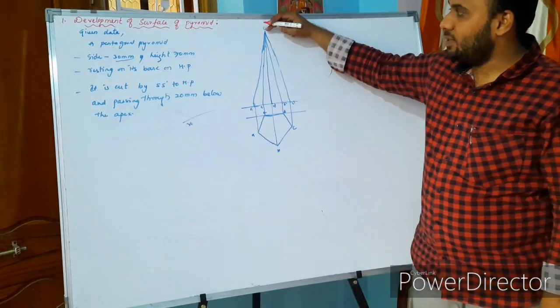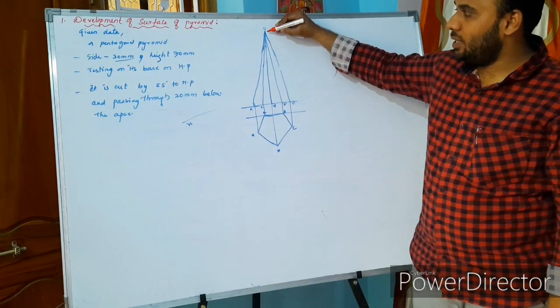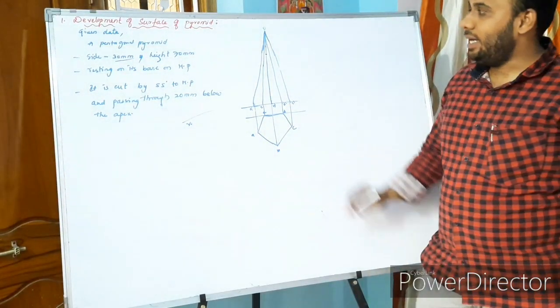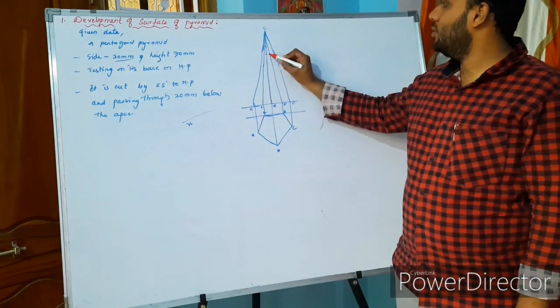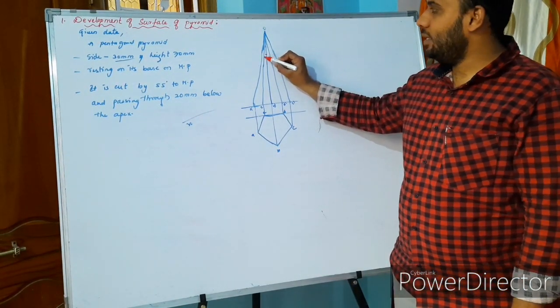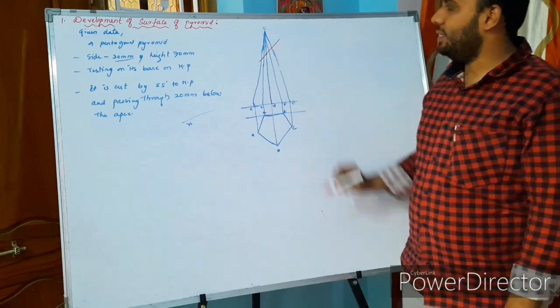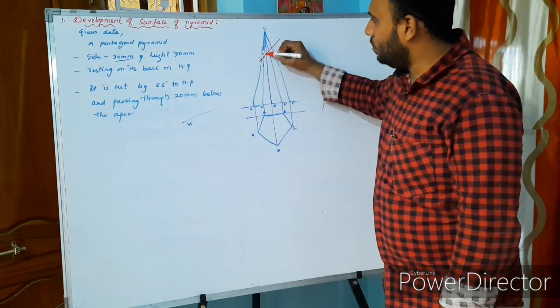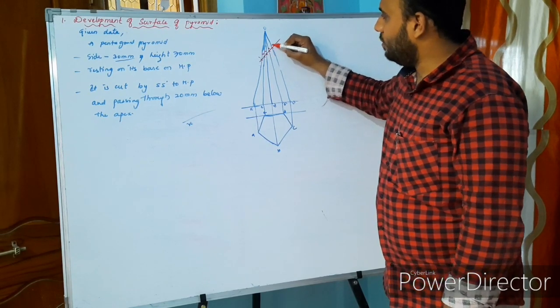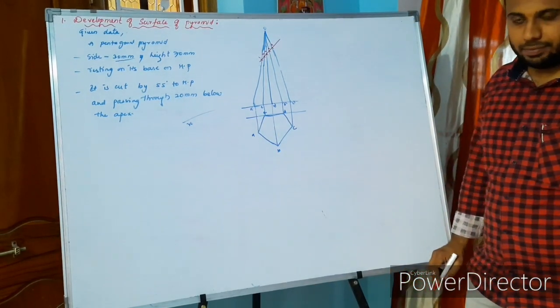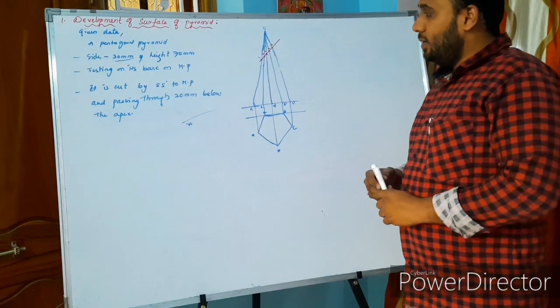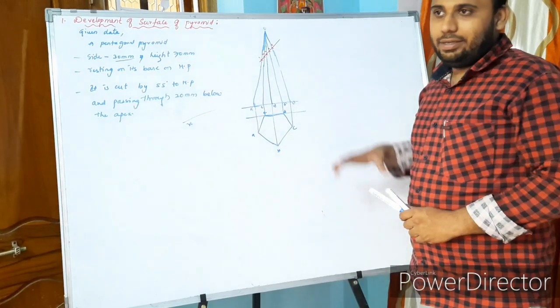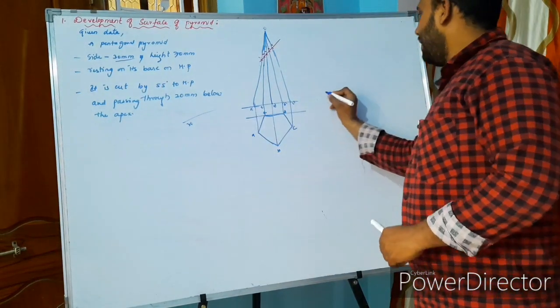Passing below 20mm from the apex. Apex means from the top side. From the top side you have to take 20mm and indicate the point. Keep your protractor and make an angle of 25 degrees. Indicate the points 1, 2, 3, 4, 5. Next thing: take C to O dash as your radius and draw the line. This C to O, or A to O, is known as your slant height.